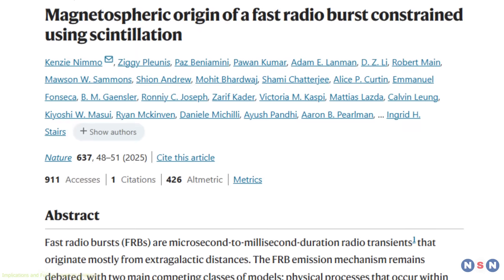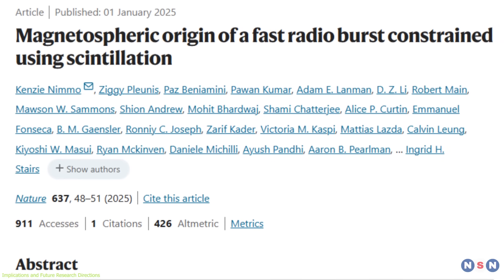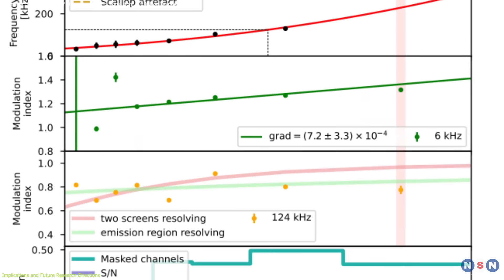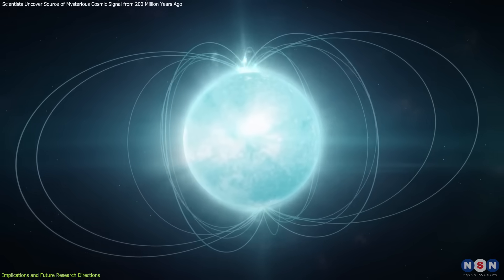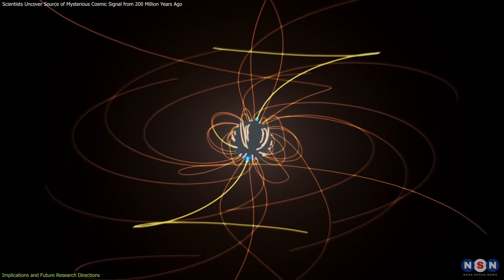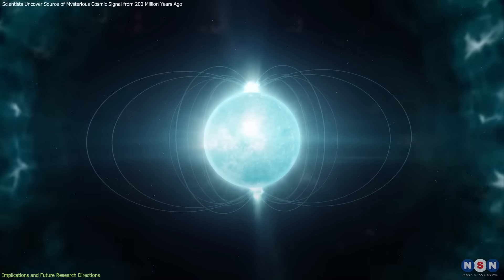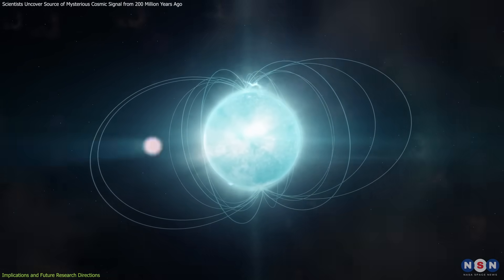The discovery of this FRB origin has profound implications for astrophysics. First and foremost, it provides definitive evidence that some FRBs are generated in the magnetospheres of neutron stars. This finding resolves long-standing debates and focuses future research on understanding the specific conditions that lead to these bursts.